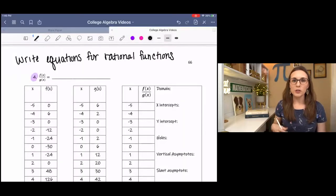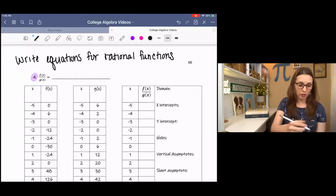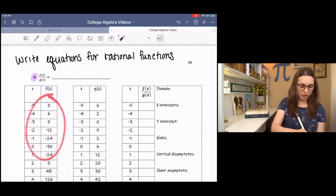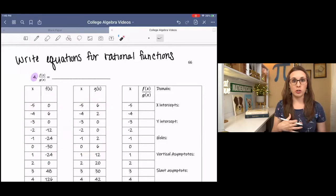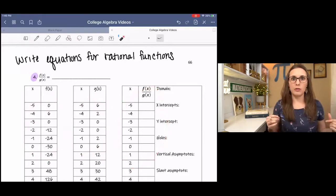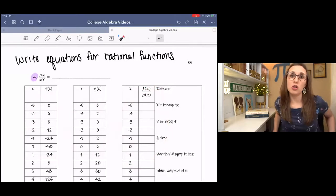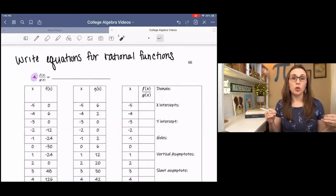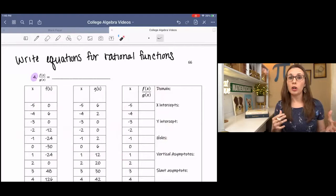In this lesson, I'll be showing you how to write the equation of rational functions when you've been either given a table of values or a graph. Whether you're given two different tables of values for the numerator and denominator or the overall table of values, you should be able to find the information that you need to write the equation or graph the function.